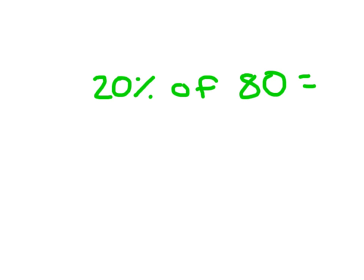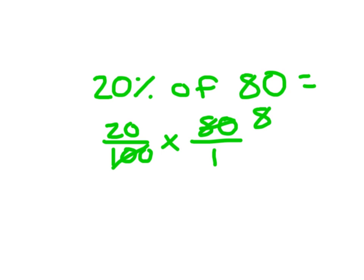Here's another one: 20% of 80, meaning we rewrite 20% as 20 over 100, multiply it by 80, times 80 over 1. You can go ahead and cancel. 80 can become an 8, so the 100 can become 10.